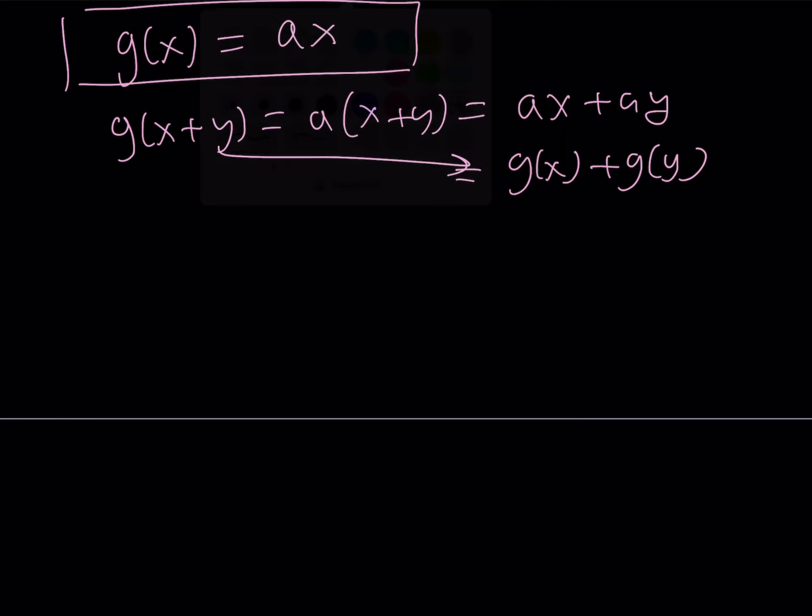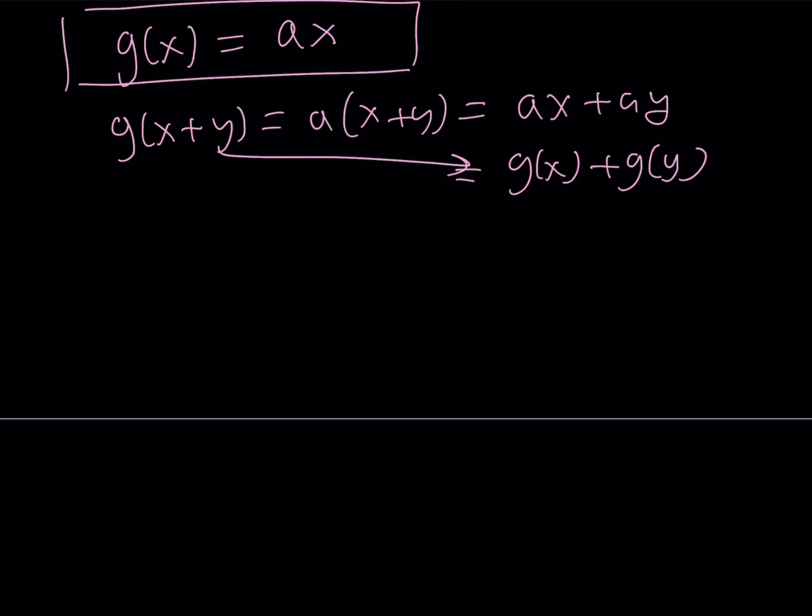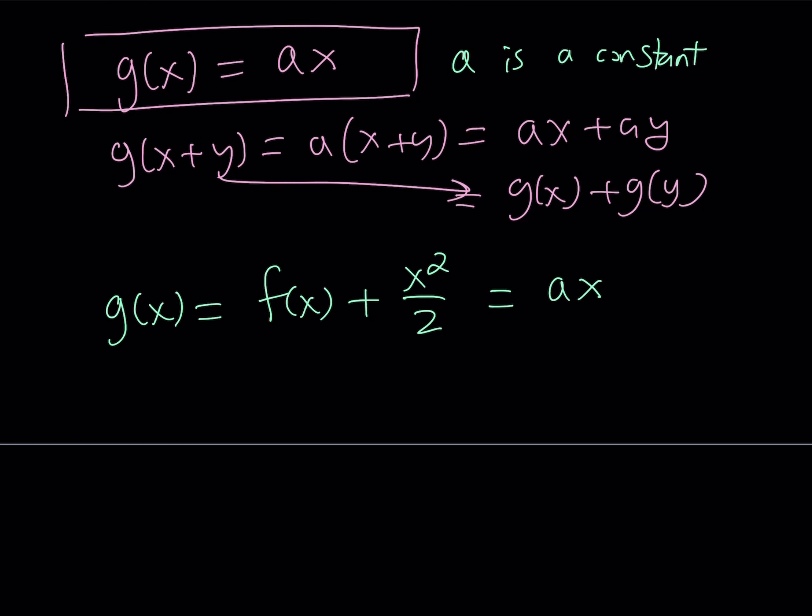Our assumption was that g of x is equal to f of x plus x squared over 2. And we just found out that g of x can be written as ax, where a is a constant. Of course, in this case, I should say that a is a constant, a is a real number, so on and so forth. All right, great. So now, since our goal was to solve for f of x, from here, we can isolate f of x.